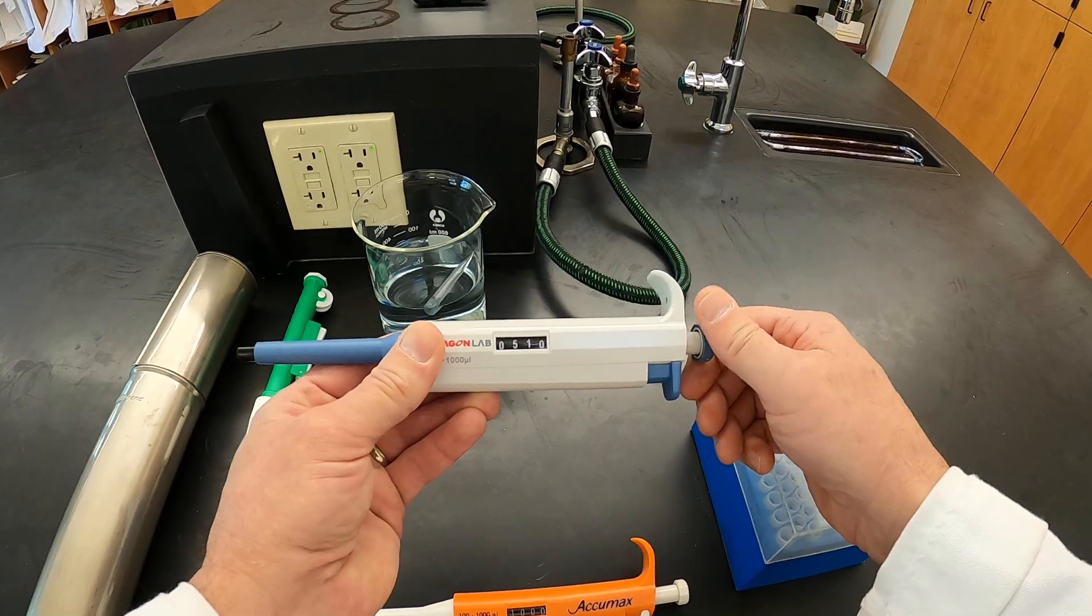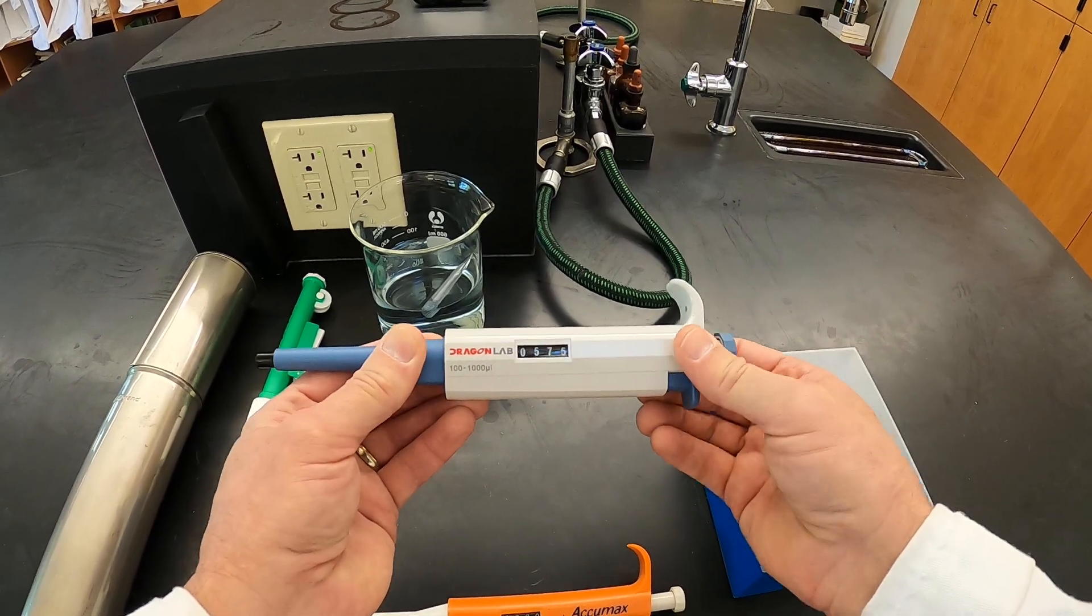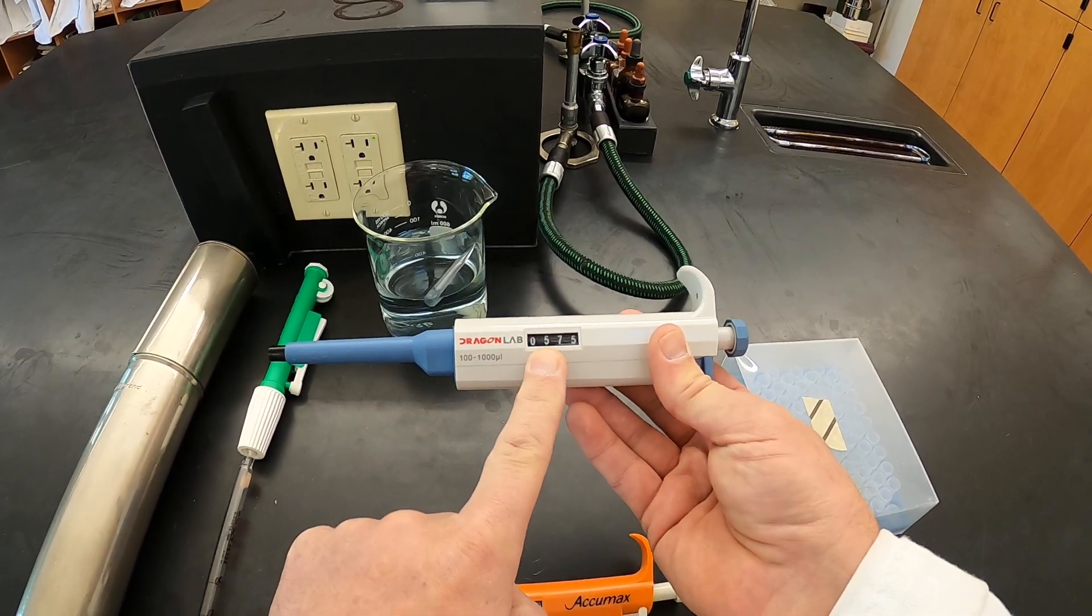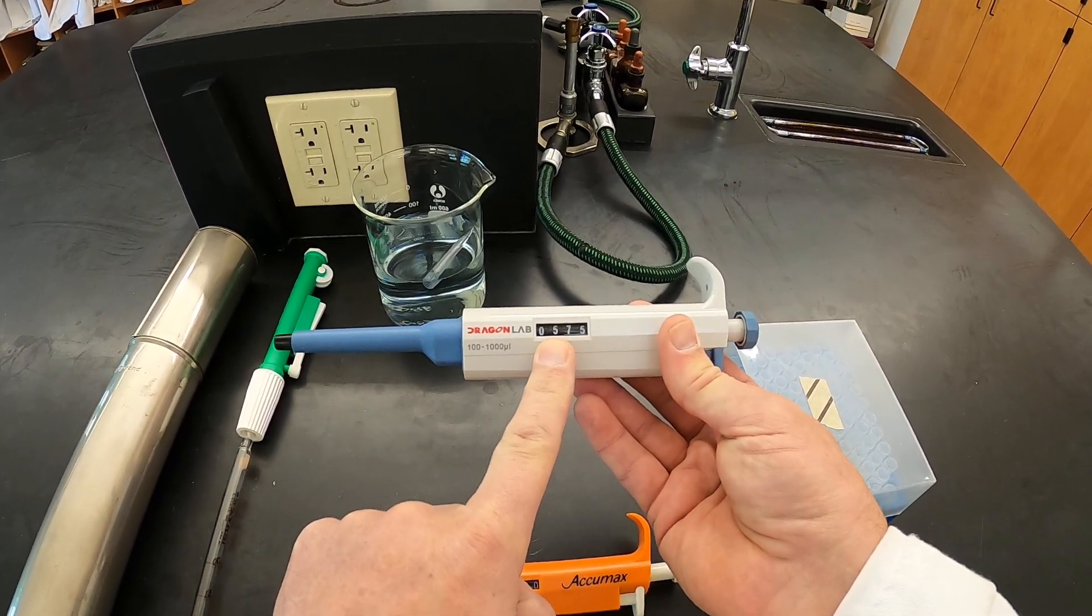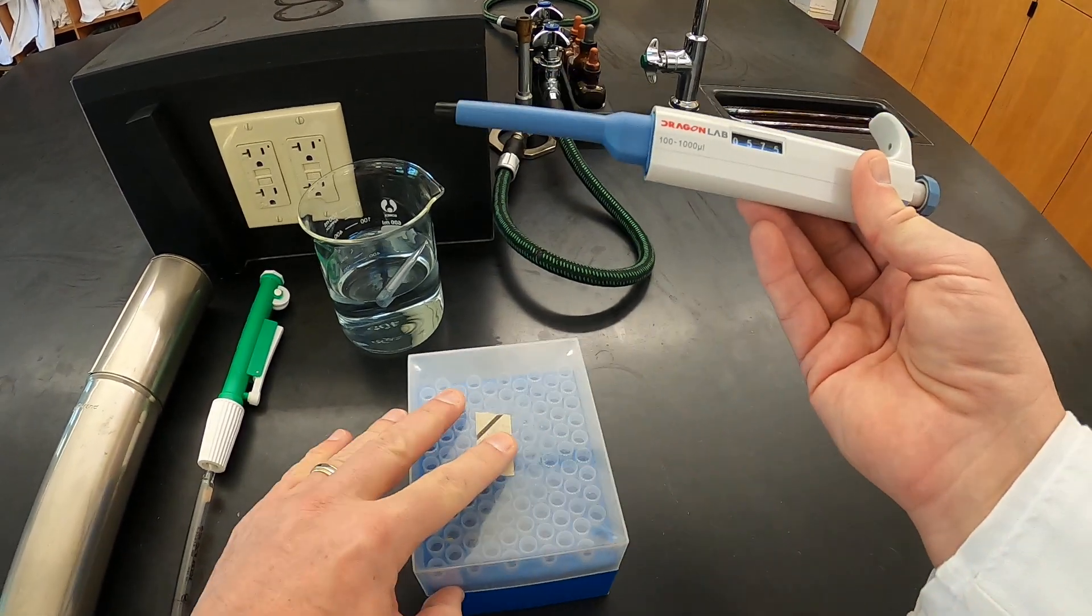So let's set this one back to 575. And in order to suck up liquid that is exactly 575 microliters with this pipette, we actually have to use these disposable tips.